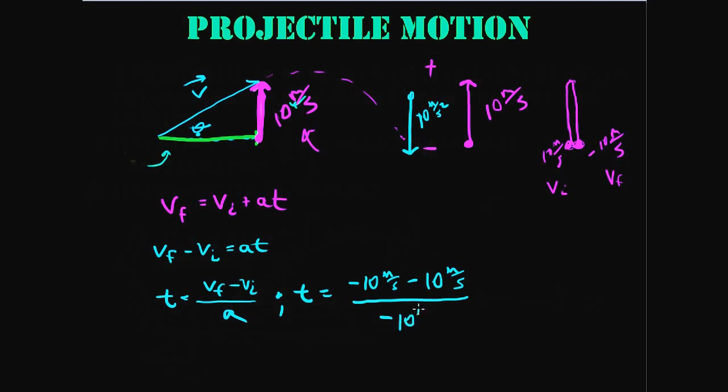So we end up with negative 20 meters per second over negative 10 meters per second squared. Negatives cancel, 20 divided by 10 is 2. And when you multiply these units here, you have second squared over meters - the seconds and meters will cancel and you're left with 2 seconds. Sorry about that, looks a little messy, but it's 2 seconds. We know the ball will go up and it'll come back down and it'll take 2 seconds to happen.